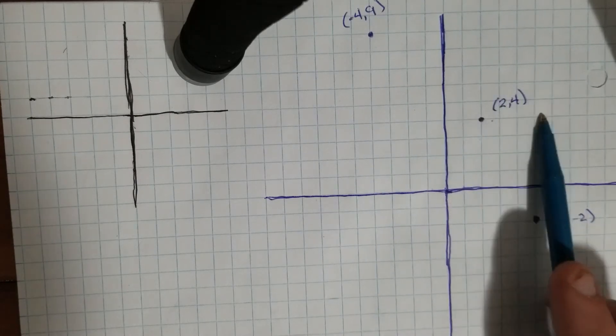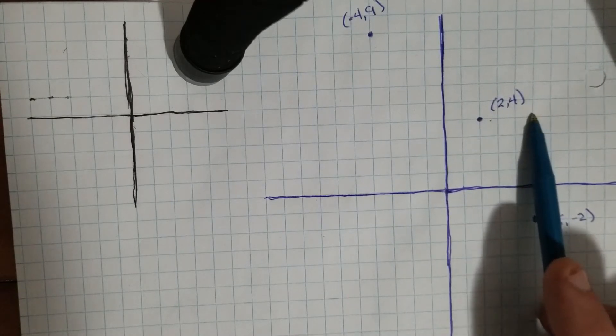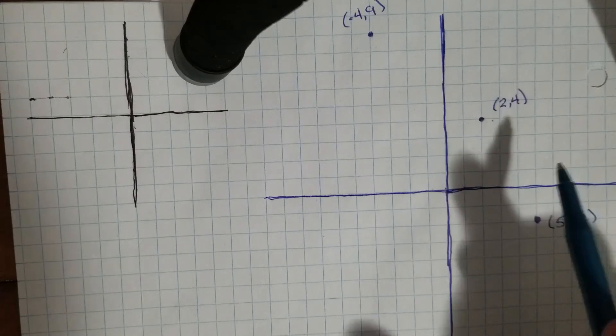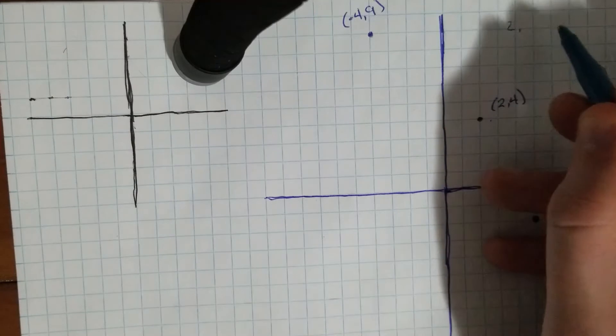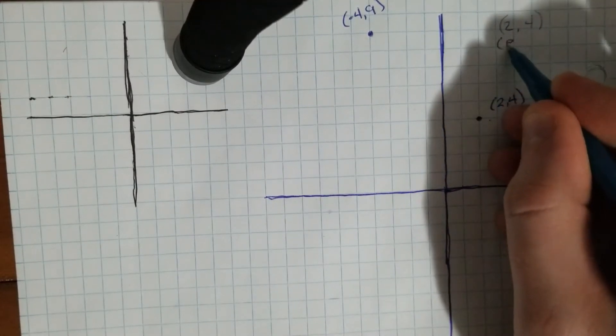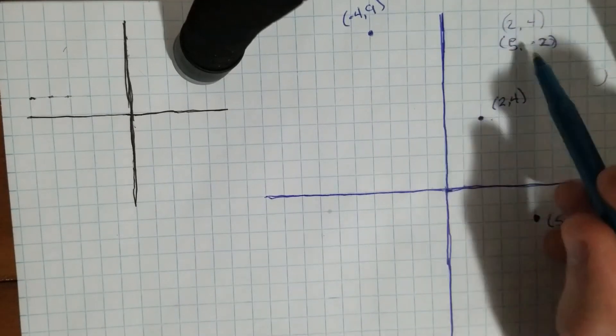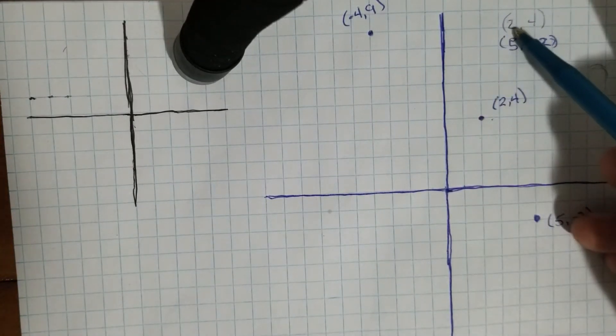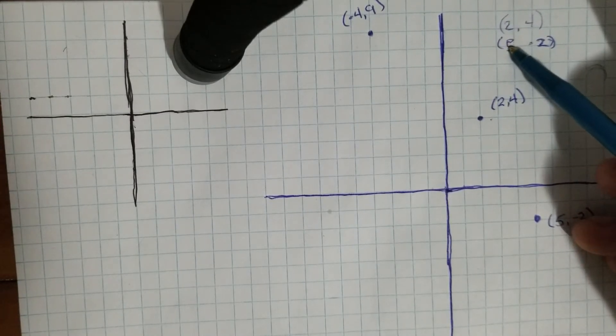So to get from this point to this point, we see we have to go over one, two, three, four. And we can also see that just using the points, where we're using the point (2, 4) and the point (5, -2). And so we can say, well what does it take for our X to get from 2 to 5? Well we have to add three in the X direction.